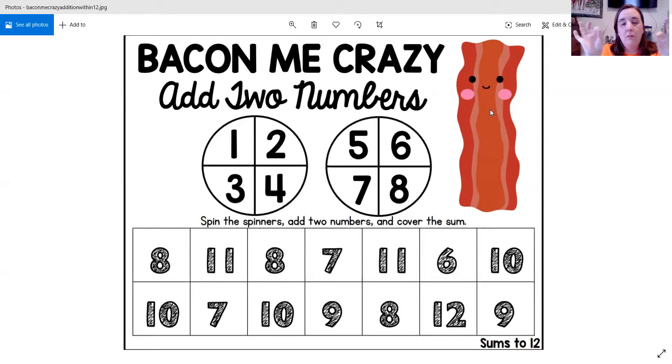So what you're going to do is you're going to take your pencil and your paper clip. The pencil goes in the middle of the spinner. So right here, if you can see my cursor moving, you put the paper clip around the pencil point and you flick it and give it a spin.